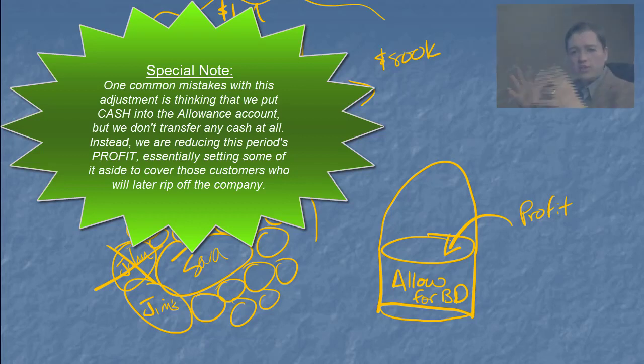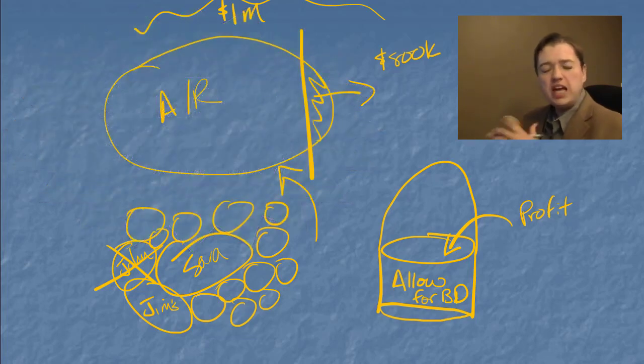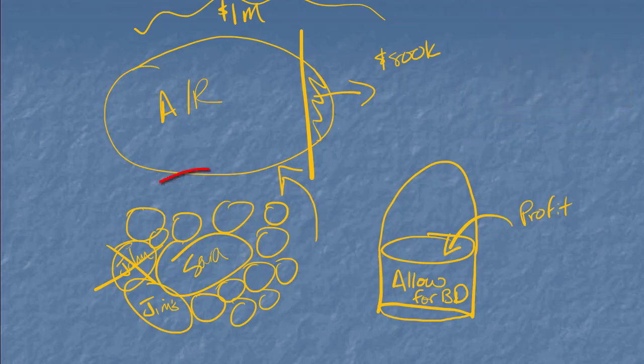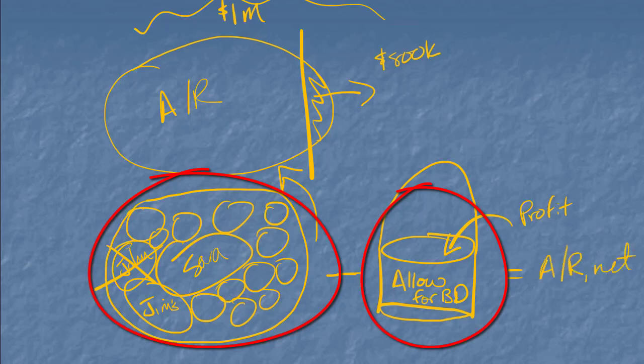And what we did was we put a bunch of profit into this bucket. So we said, of all this revenue that we thought we made, $200,000, we don't think we're actually going to get. That's that amount from up above. And so we put that into this bucket. And what we do when we do our balance sheet is we say, well, let's take this amount of accounts receivable, the total amount or the sum of all these little teeny accounts, we'll subtract this bucket, and that will give us what we call accounts receivable net.